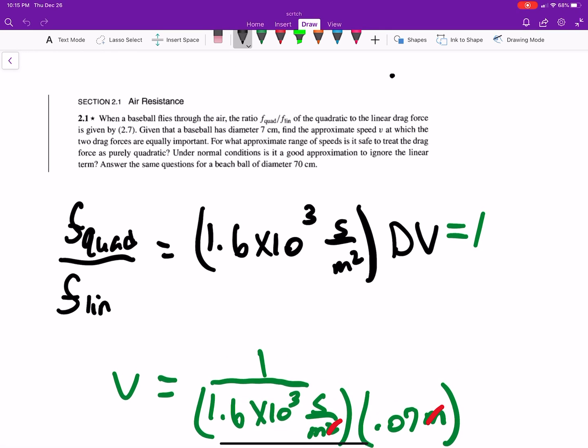So this is the first question in Chapter 2, which says, when a baseball flies through the air, the ratio f quad over f linear, of the quadratic to linear drag force, is given by equation 2.7. That's this guy, I think.